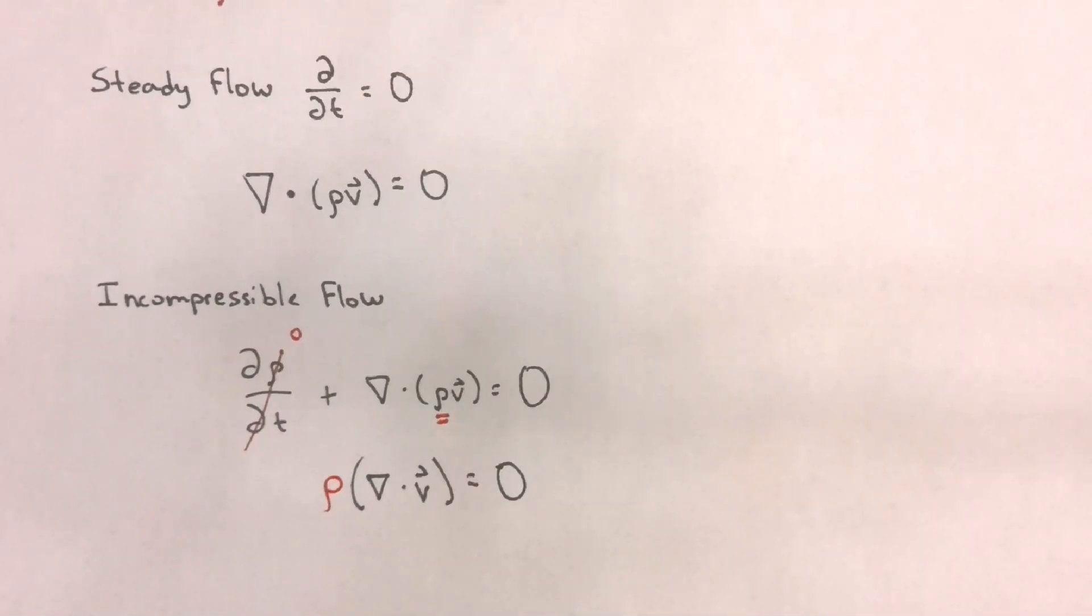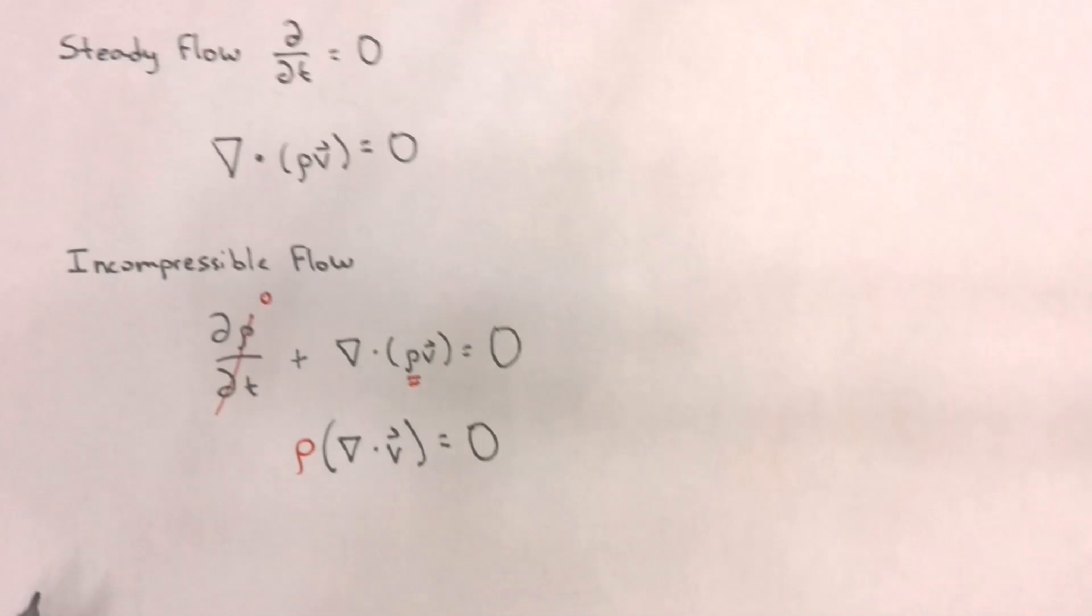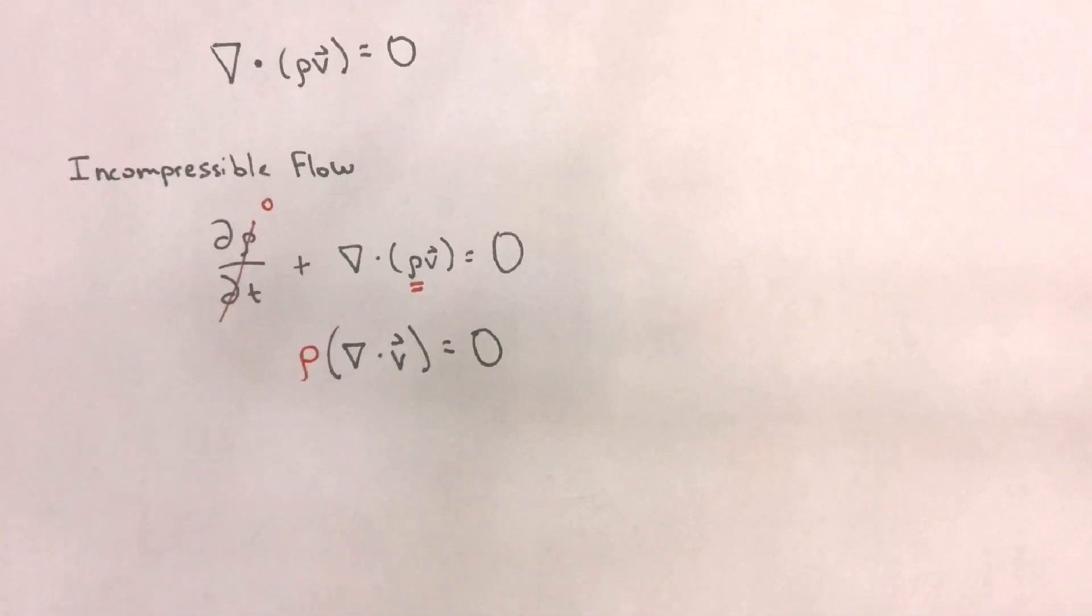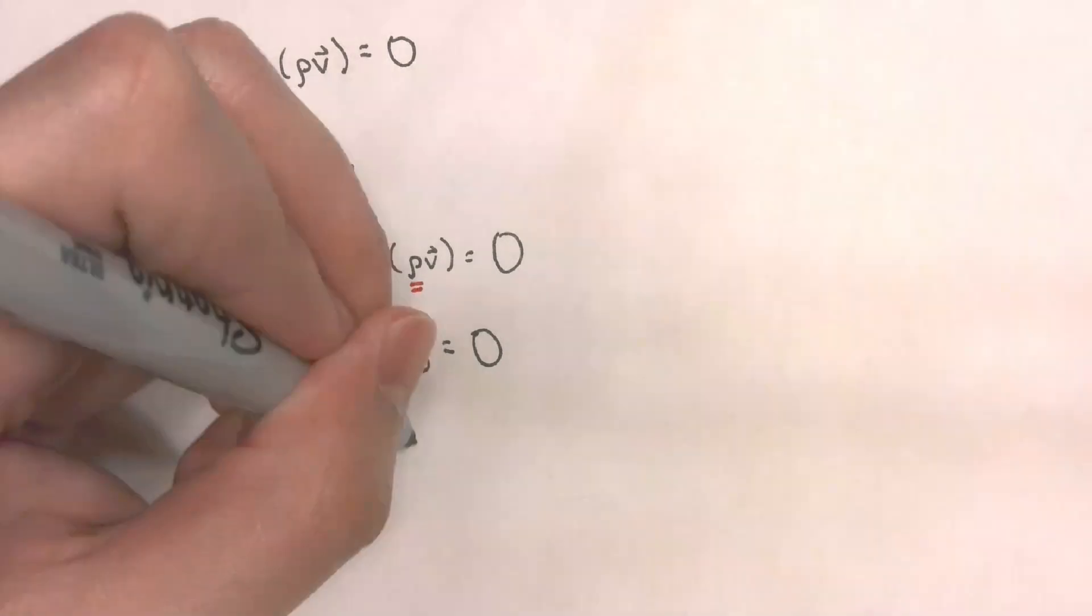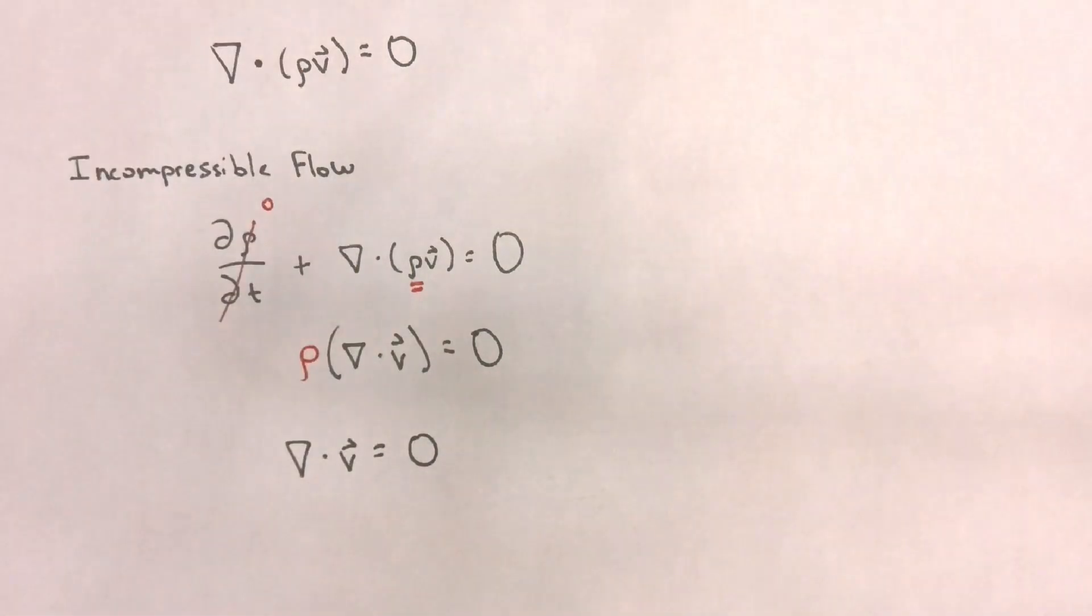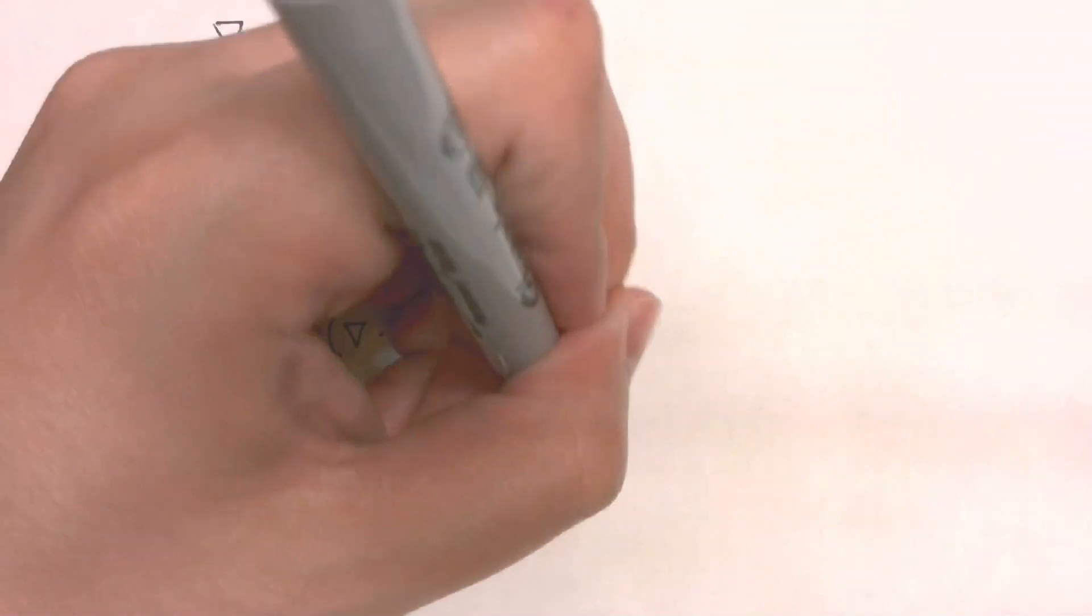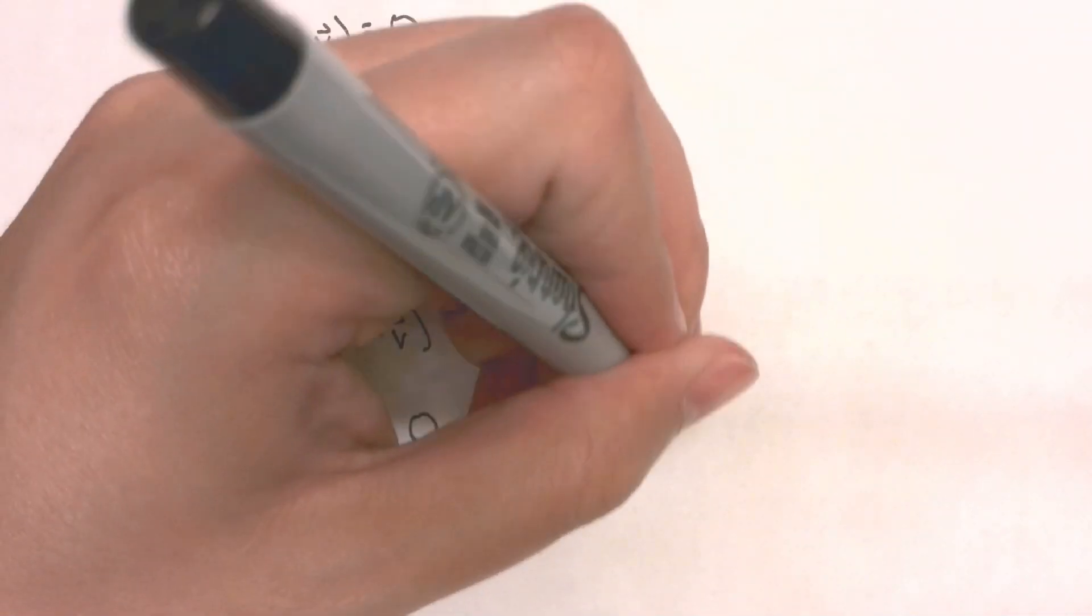Of course, a fluid cannot have a density of zero. So for this equation to be satisfied, we can cancel out the density and we will get that the divergence of the velocity field equals zero. This is also sometimes written as divergence V equals zero.